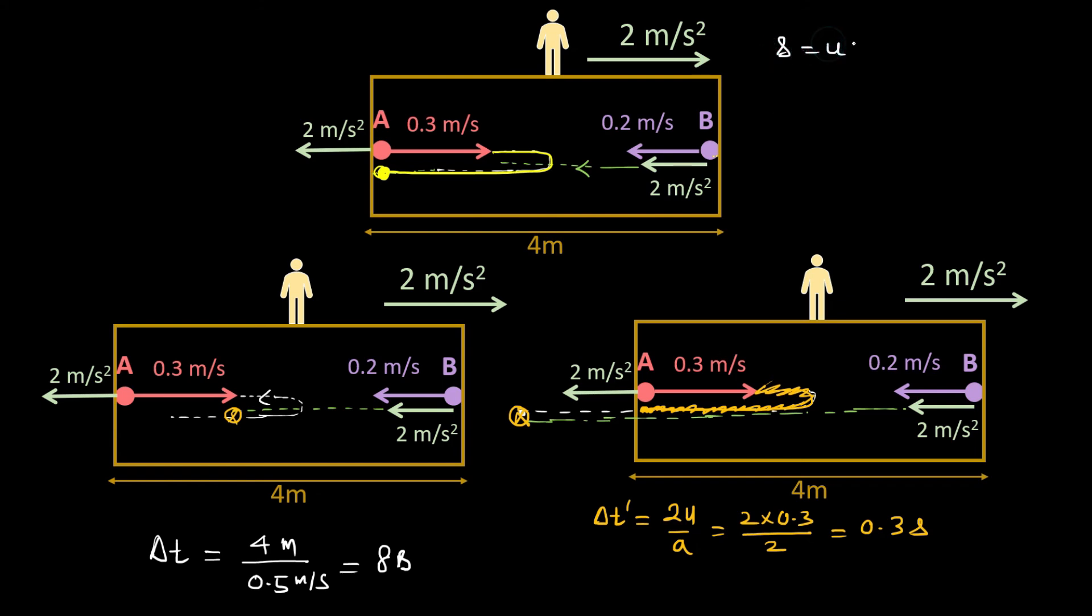Let me apply the second equation of motion, which is s equals ut plus half at squared. Let me take this as a positive direction and I'm talking about particle B. When particle B travels a distance of 4 meters, that is a displacement also, the collision happens. So s is equal to plus 4, initial velocity is 0.2, time let me assume t, acceleration is 2, and this is t squared. So that is a quadratic equation, t squared plus 0.2t minus 4 equals 0.